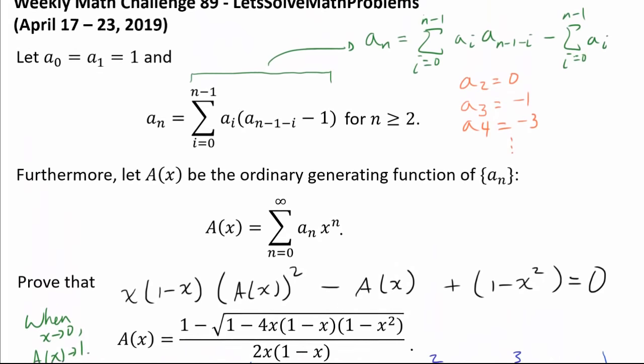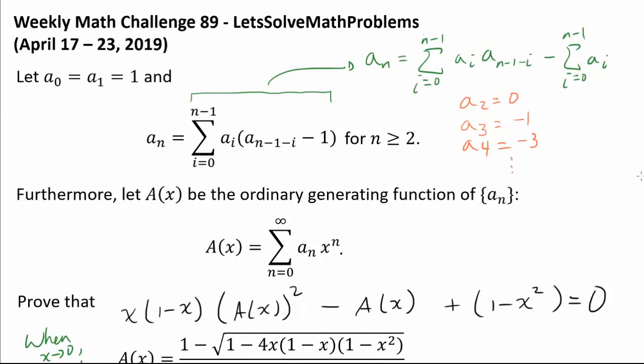Anyway, we have come to the conclusion that our A(x) is given by this generating function, this closed form of the generating function. So we are done.